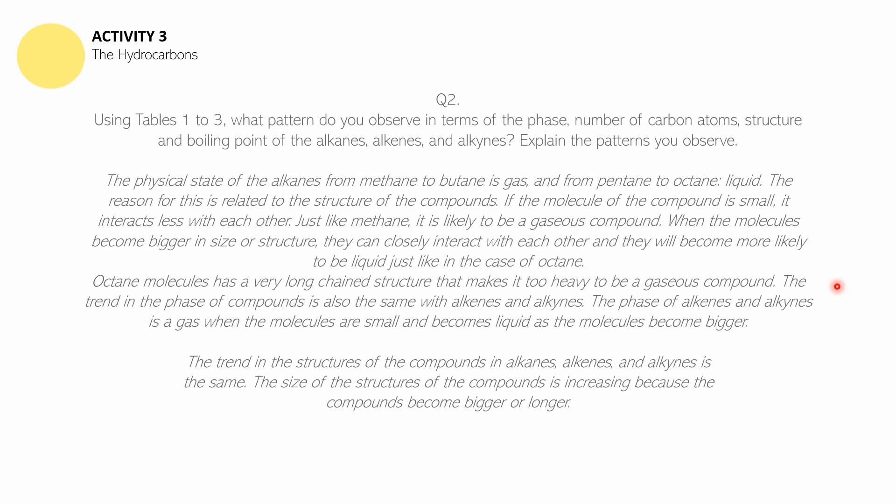The answer to question number two: The physical state of alkanes from methane to butane is gas, and from pentane to octane, liquid. The reason is related to the structure of the compounds. If the molecule is small, it interacts less with each other — like methane, it is likely to be a gaseous compound. When molecules become bigger in size, they can closely interact with each other and will more likely be liquid, just like octane.